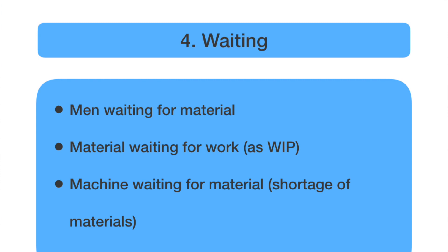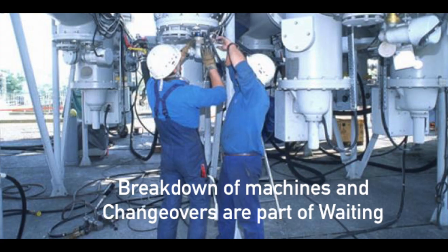We can reduce motion waste by designing the workplace so that people do not need to move unnecessarily. The fourth waste is waiting — whenever material waits for men or machine, whenever a machine waits for men or material, or whenever men wait for machine or material, there is waiting happening.